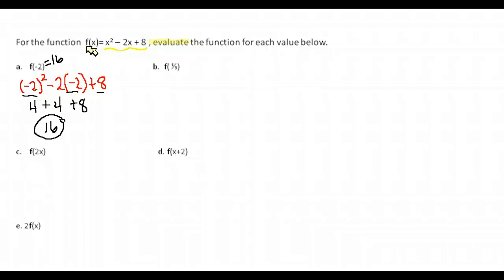So the value f of negative 2 is equal to 16. And again, what we did is take every place there was an x, we replaced it with a negative 2, and then carefully followed order of operations to evaluate that.